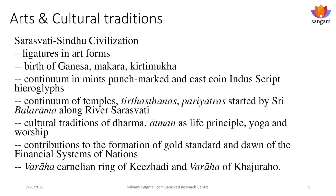We have seen the birth of Ganesha as a ligature form structure. We have seen Makara — the crocodile, fish, elephant trunk — combined together into a combined animal called Dvakara, Kirtimukha, the fierce tiger face. They are all Induscript hieroglyphs. This tradition of picture writing — 'Mlechha Vikalpa' called by Vatsyayana, or mentioned in Manu — continues as a continuum in the mints of punch mark coins and cast coins with Induscript hieroglyphs. This also continues in temples, tirthastanas, and pariyatras started by Sri Balarama along the river Saraswati. We have the cultural traditions of Dharma, Atman as life principle, yoga and worship, and contributions to the formation of the gold standard and the dawn of financial systems.